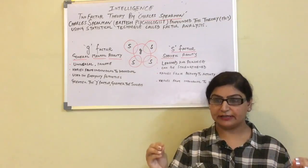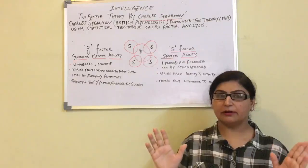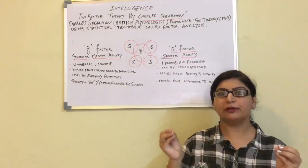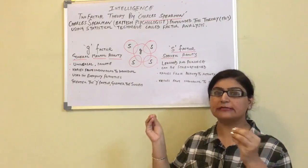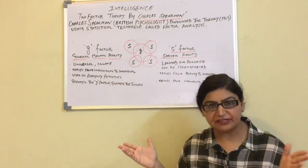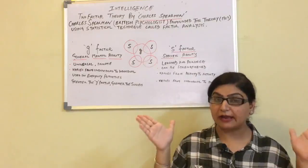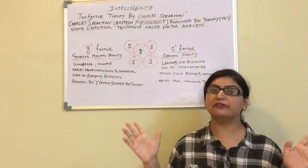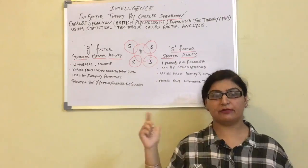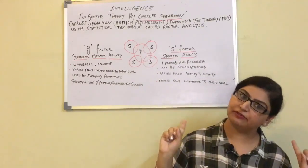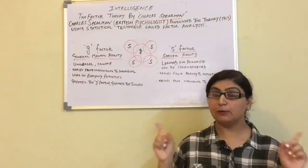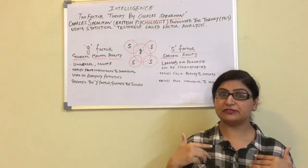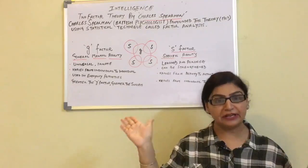For example, when students are given a test, their scores differ. If 40 students are tested, student A scores 80, student B scores 50, student C scores 70. Their scores differ because of G-factor. G-factor accounts for individual differences — that is why we all differ in our abilities and behave differently in different situations. My G-factor is different from yours; we all possess it, but in varying degrees.